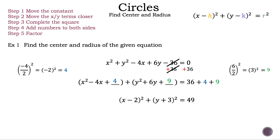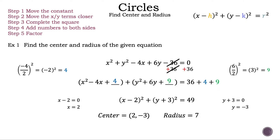Now if the factoring bit was too fast, there is a link in the description below with more detail. Now that our equation is in standard form, let's find the center (h, k). Setting x minus 2 equal to 0 and adding 2 to both sides gives x equals 2 — our center shifted two units to the right from the origin. Setting y plus 3 equal to 0 gives y equals negative 3 — our center shifted three units down. So our center is (2, negative 3), and our radius is the square root of 49, which is 7. And that is example 1.